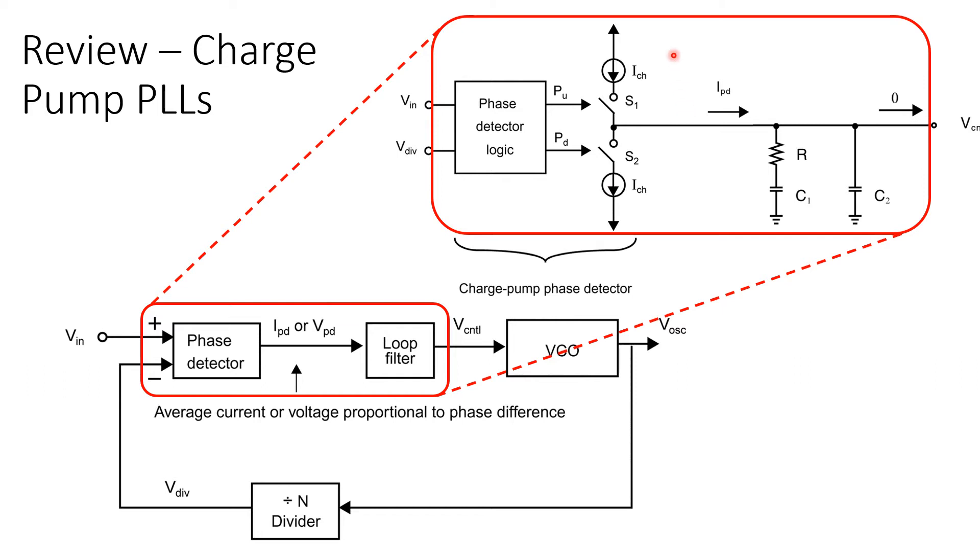It turns out the design of these current sources and switches are really critical because any non-idealities there translate into changes in the control voltage applied to the VCO and therefore have a direct impact on the phase of the recovered clock at the output of the phase lock loop.